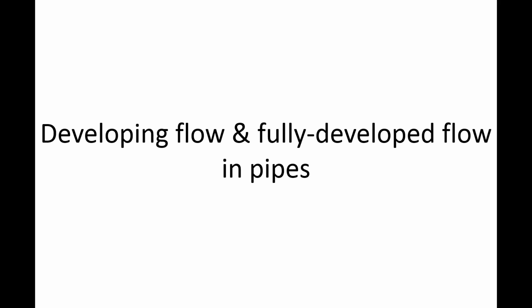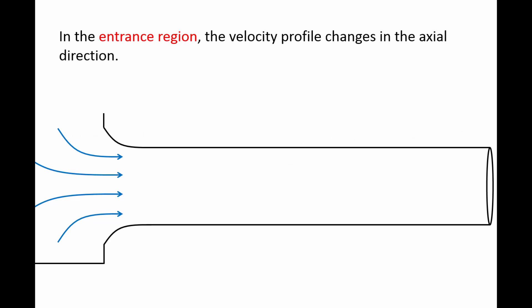In this lesson, we will discuss the general characteristics of developing flow and fully developed flow in pipes. When a flow enters a pipe system, there will be a section of pipe called the entrance region, where the shape of the velocity profile changes in the axial direction.